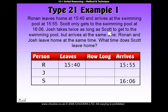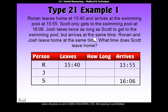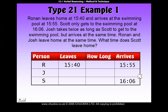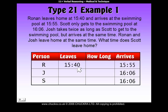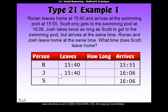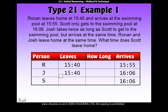Josh takes twice as long as Scott to get to the swimming pool. We don't know how long Scott takes yet, so we can't write down how long Josh takes. But we can use the information that Josh arrives at the same time as Scott — since we know Scott arrived at 16:06, Josh also arrives at 16:06. Ronan and Josh leave home at the same time, and since Ronan leaves at 15:40, Josh also leaves at 15:40.